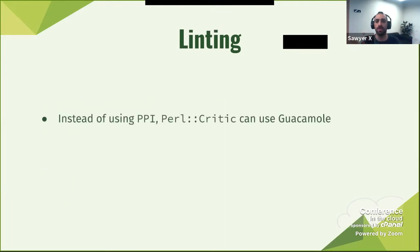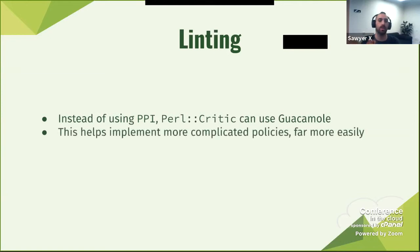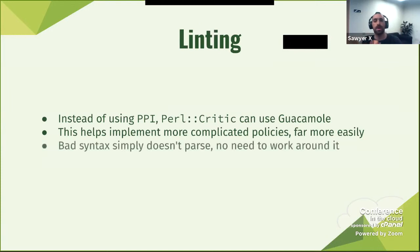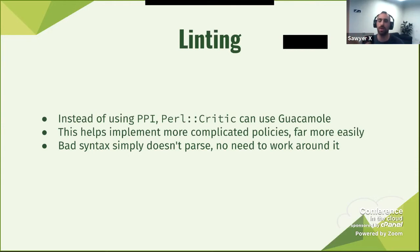Linting with Guacamole instead of PPI: Perl::Critic could theoretically use Guacamole. It helps implement more complicated policies, and it is much easier to do that. The only problem, of course, is that it could only work with things that are standard Perl — but it will definitely be more accurate. Banned syntax simply doesn't parse, so we don't need to work around it. We have quite a few Perl::Critic policies for syntax that is basically banned — things that are just bad code. But because this is a specification for correct code, I don't even need those policies.